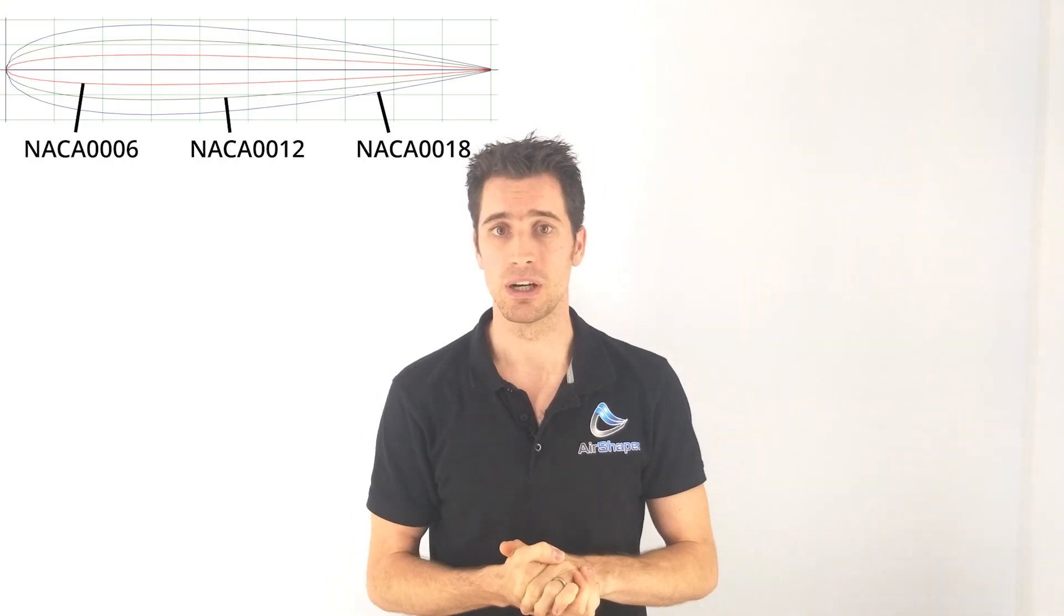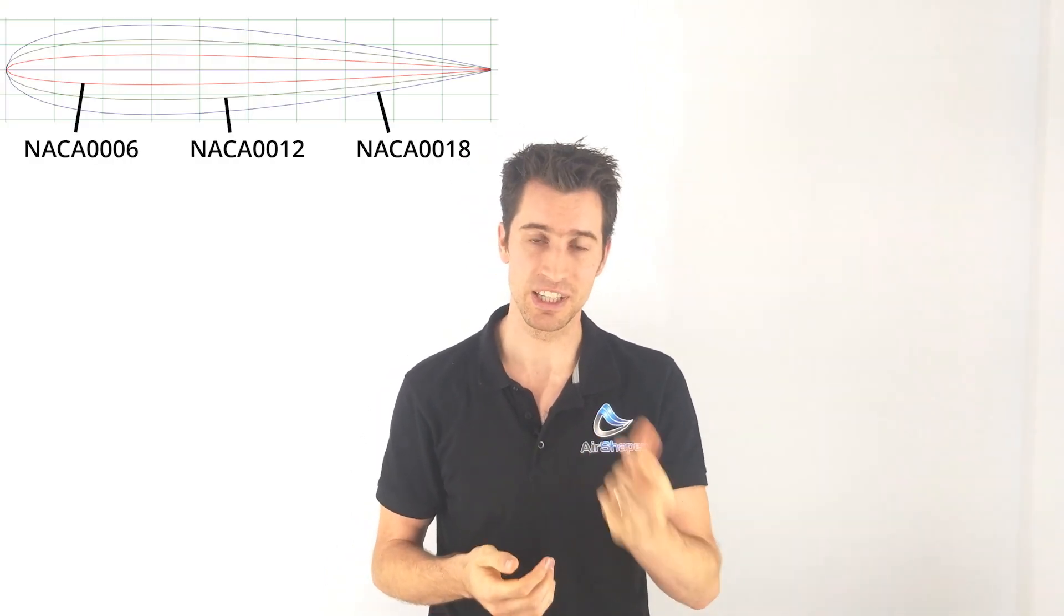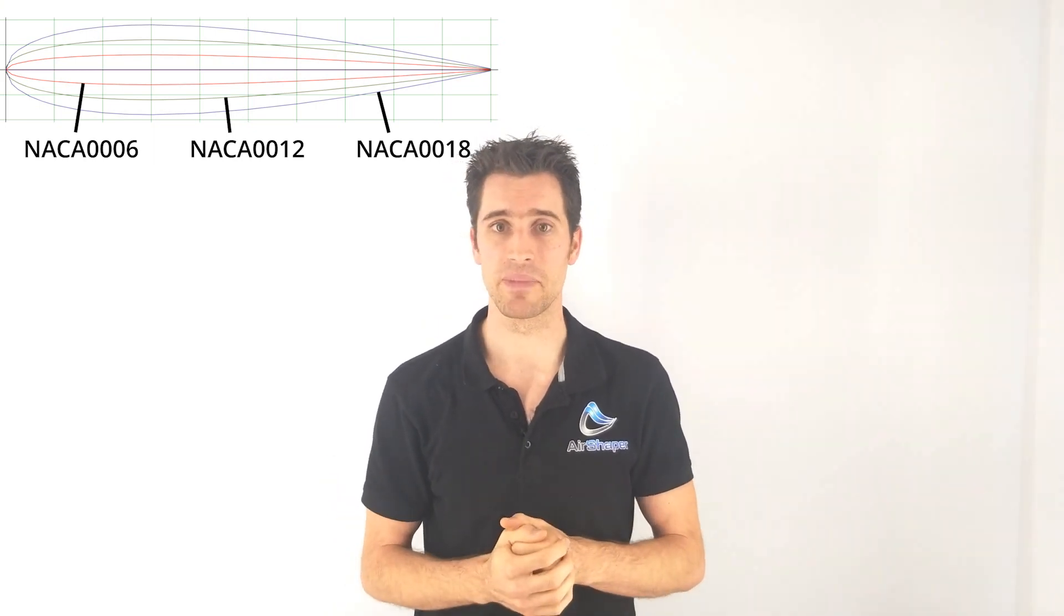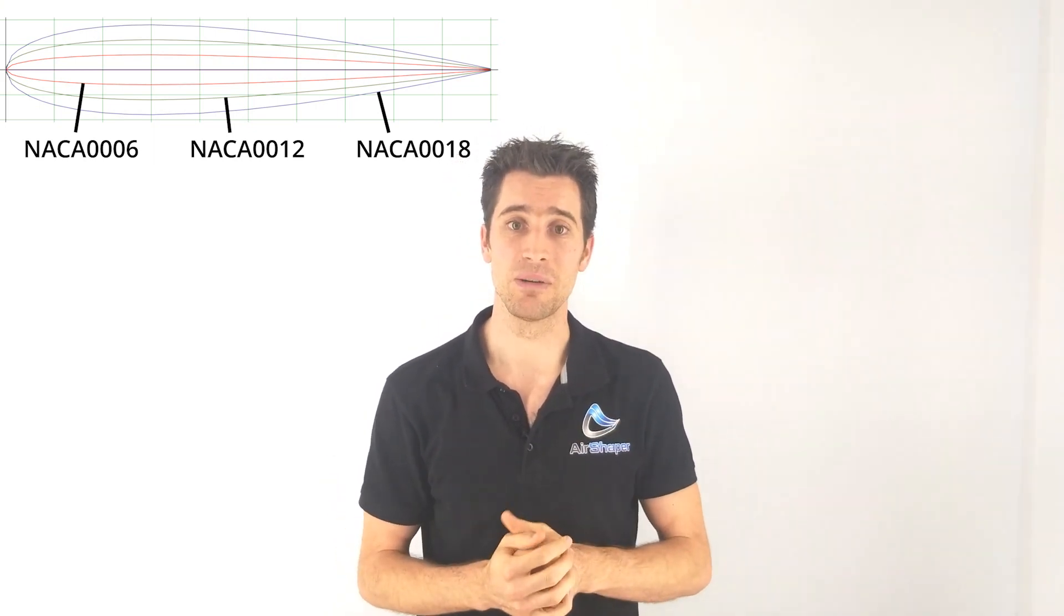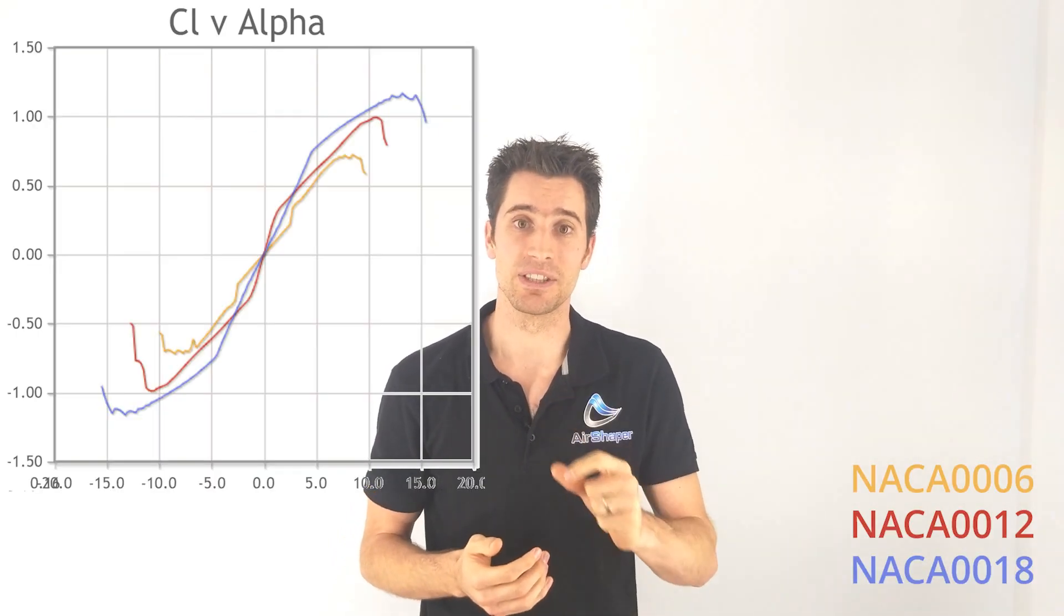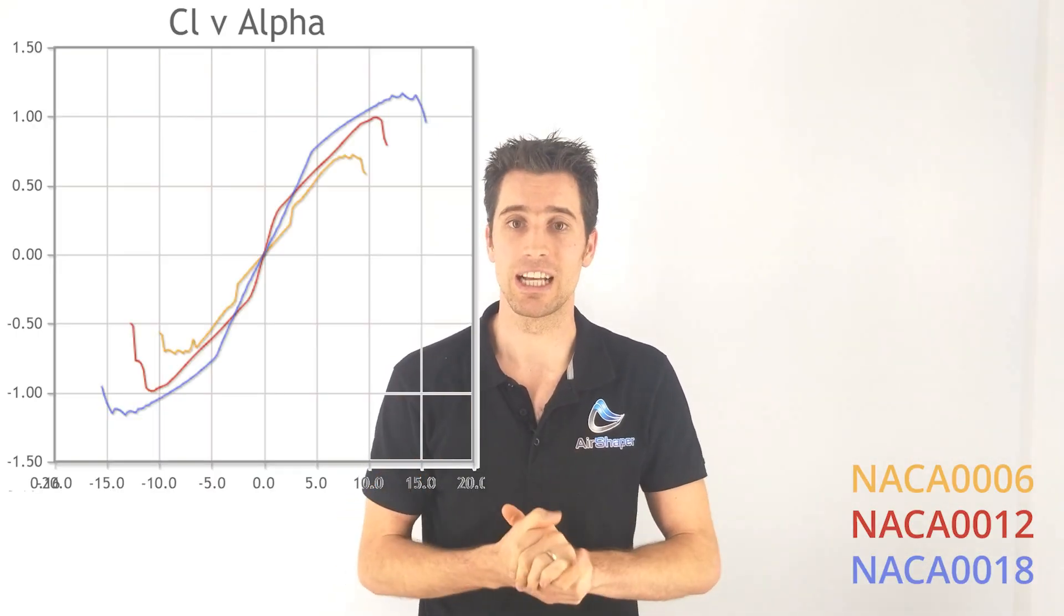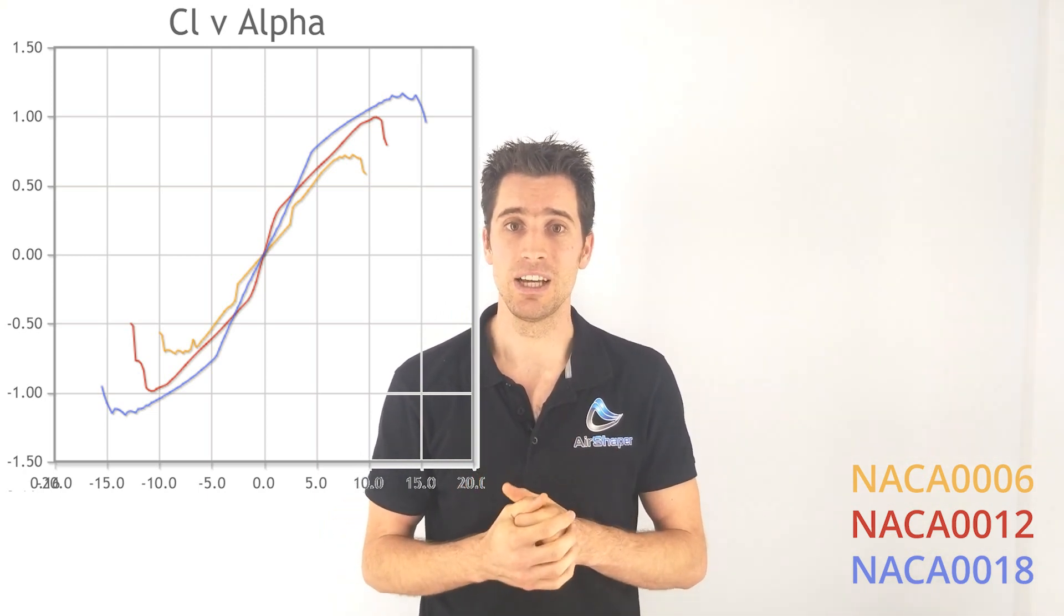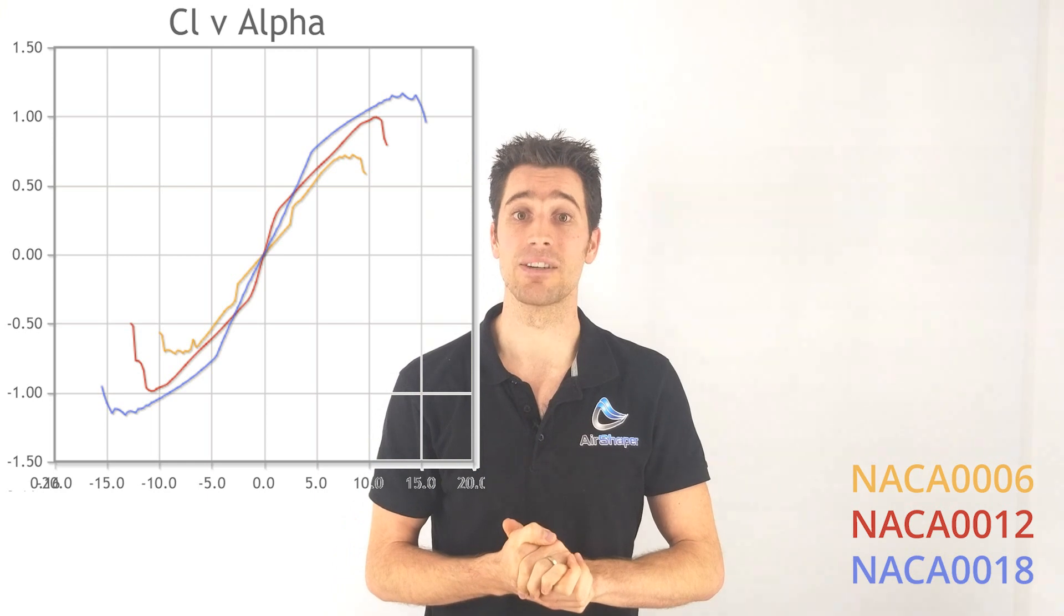Now airfoils with a high relative thickness tend to have a much higher stall angle of attack. You can see this when comparing the lift curves of for example the NACA 0006, NACA 0012 and the NACA 0018, which are basically the same airfoil but with a different relative thickness. The NACA 0006 already starts to stall at an angle of attack of 8 degrees, whereas the NACA 0018 only starts to stall at an angle of attack of 13 degrees.